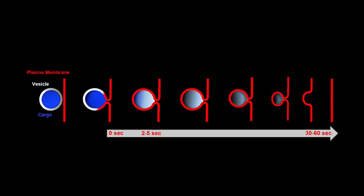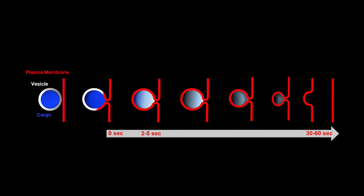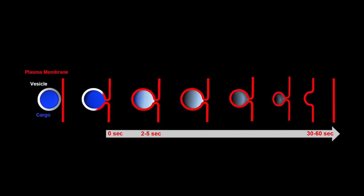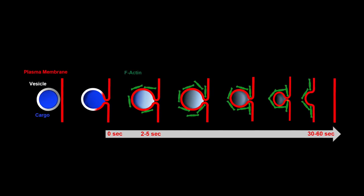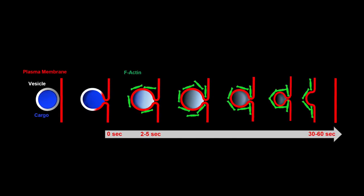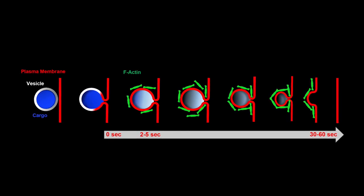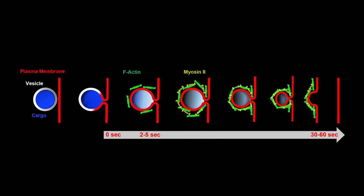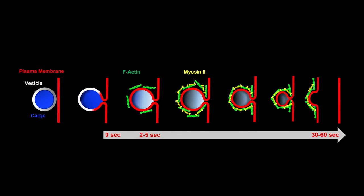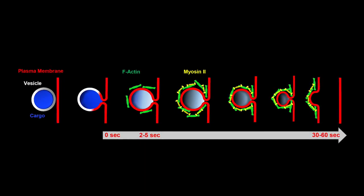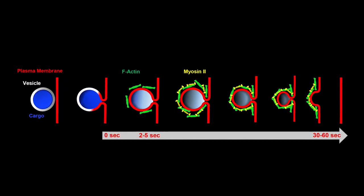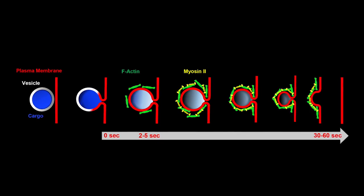So what drives the integration? We found that actin filaments are important. They form a cage around the vesicles that contracts and pushes the membranes. The contractions are driven by an actin-based motor called myosin-2. Myosin-2, which also forms filaments, binds to F-actin and generates tension.